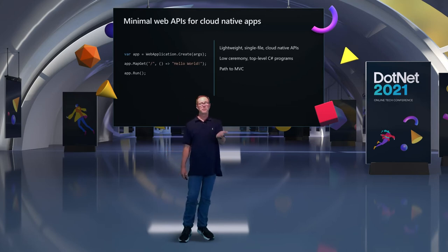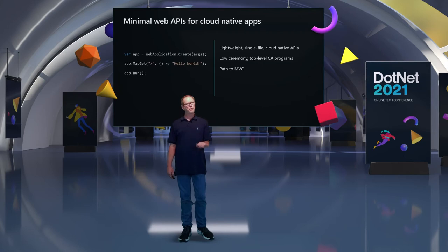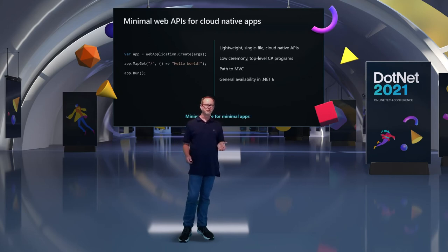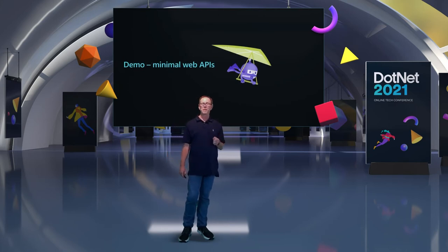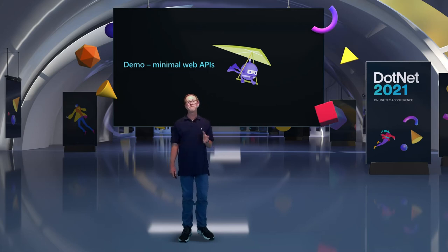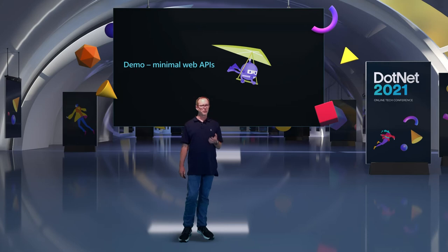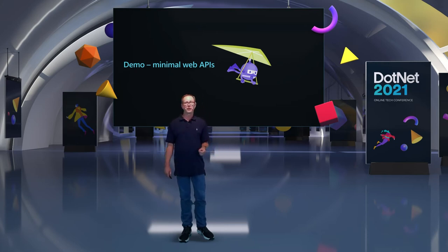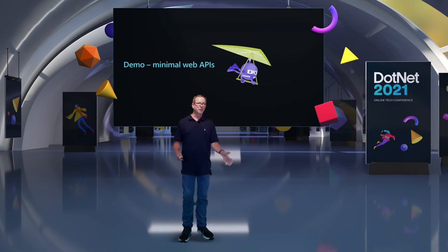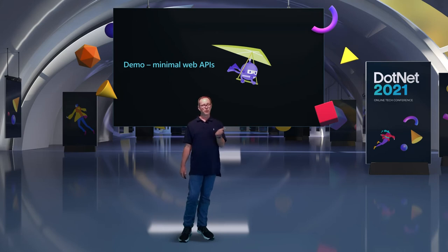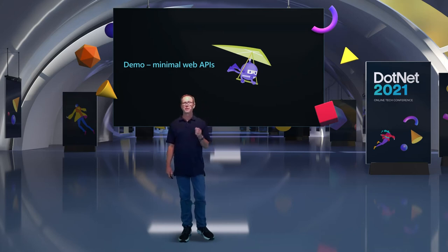If you have a lot of APIs, putting them all in a single file is probably not a good idea, and of course all of this is going to be generally available in .NET 6. Next, I want to do a demo of minimal web APIs. I'm going to play a video instead of doing it live — that's because at Build conference a few weeks ago, this stuff is so pre-release that none of the tools actually work all the way yet. We're just a week or so away from having the tools available.